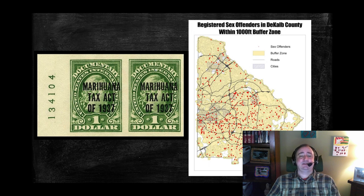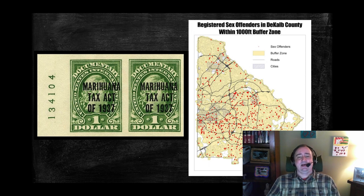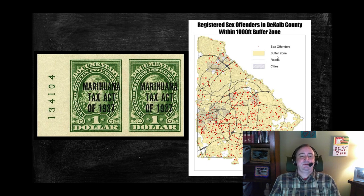My sex crimes book includes a map of DeKalb County with sex offender residency restrictions applied. It shows the 4% of the county that's habitable — which isn't even residential.